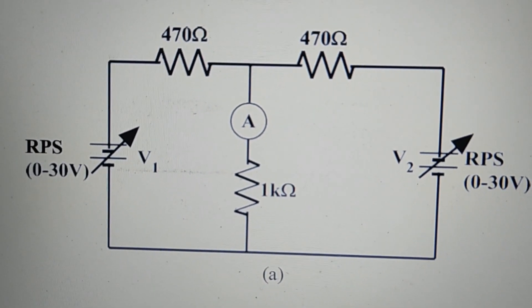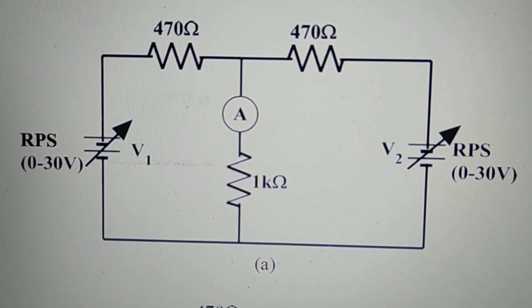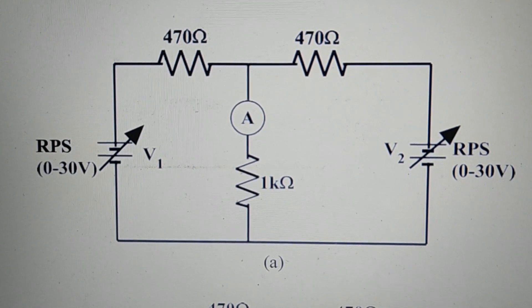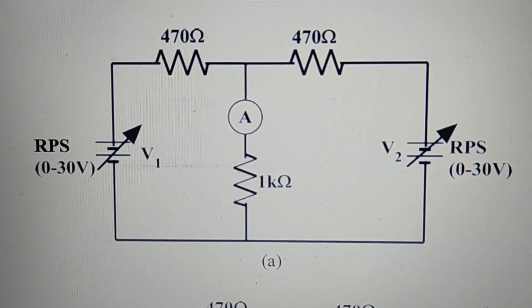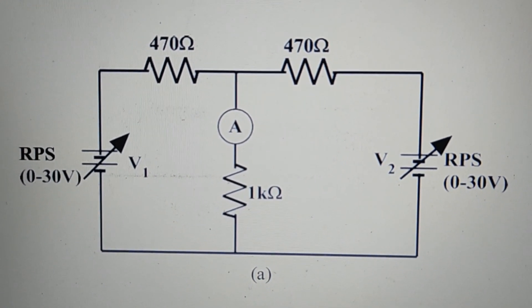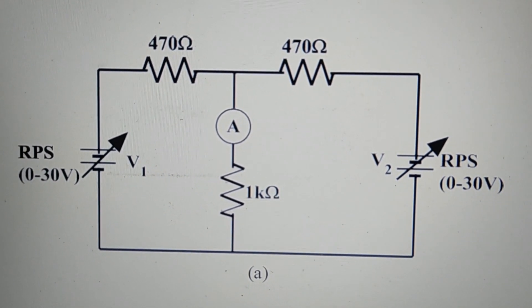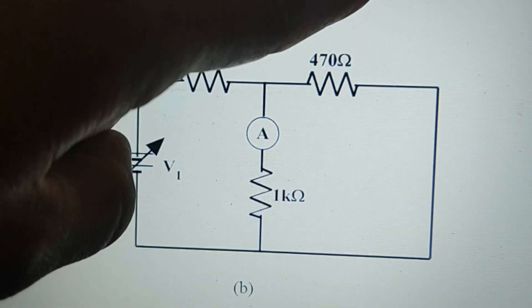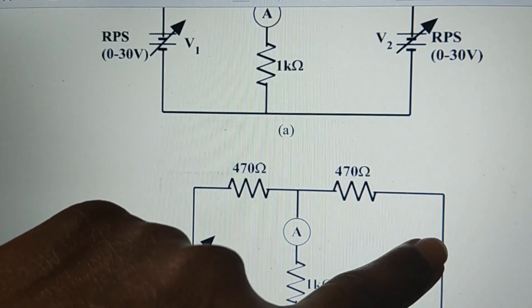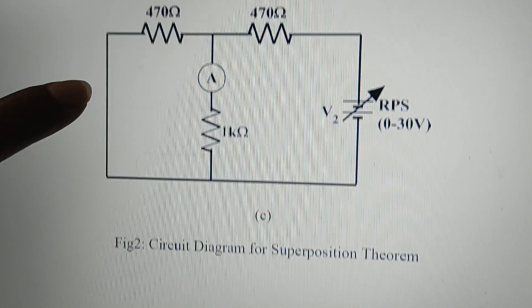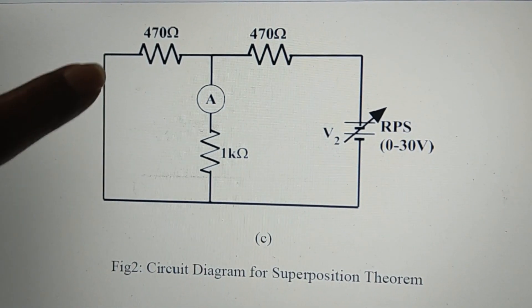In the circuit we have two voltage sources and three resistors: 470 ohms, 1 kilo ohm, 470 ohms. To obtain the response across any element according to superposition theorem, we replace the source with its internal resistance. The internal resistance of a voltage source is zero, so that zero resistance is replaced with a short circuit. Here we have replaced the V2 voltage source with a short circuit line. In the second case, the first voltage source is also replaced with a short circuit line.